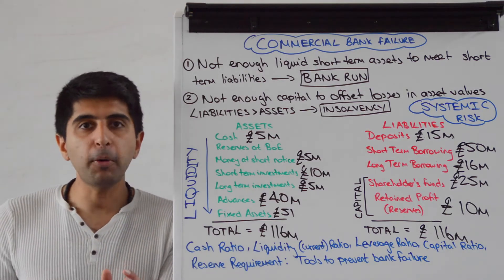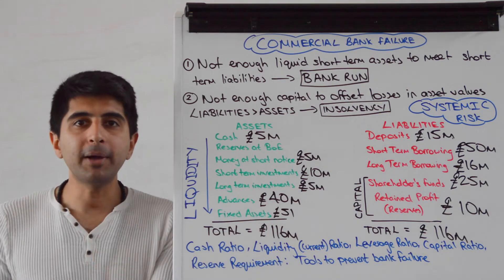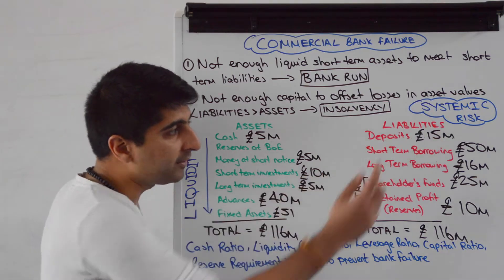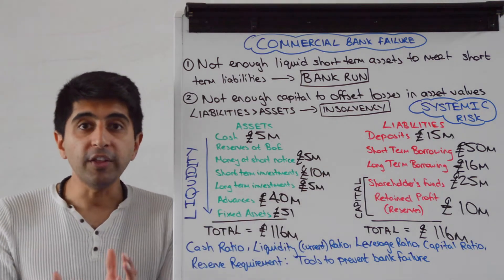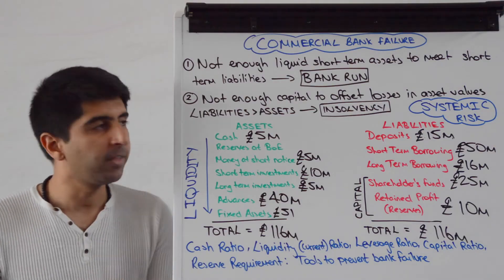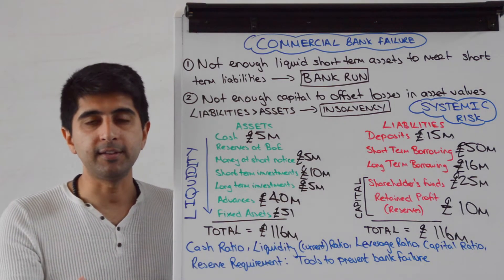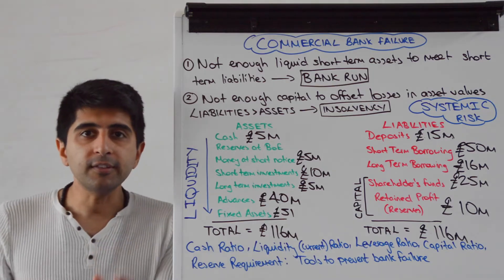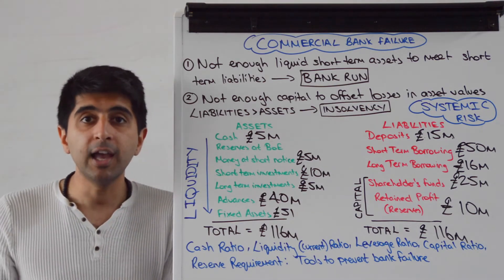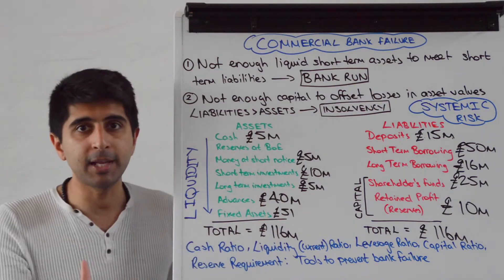Let's say that all depositors and all short-term lenders to the commercial bank want their money back right now. That will be 65 million pounds worth of money that this commercial bank has to pay right now. These two are the current liabilities, the short-term liabilities. So, does this commercial bank have enough short-term liquid assets, i.e. current assets, to pay that money off? Well, no they don't.